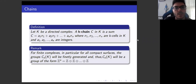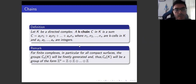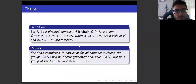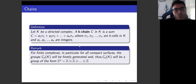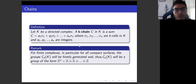Let's define chains and chain groups. We say we have a directed complex. If each cell in the complex has an orientation, then we say complex k is a directed complex. An orientation of a cell is a specific choice of the order of its vertices. We can define chains as a linear combination of finitely many oriented cells. C_k is a group with respect to chain addition. For finite complexes, the group C_k will be finitely generated and will be a group of the form of a direct sum of integer groups.